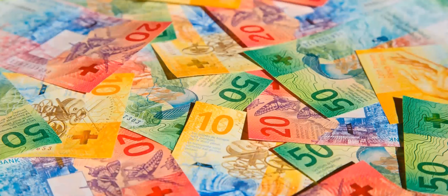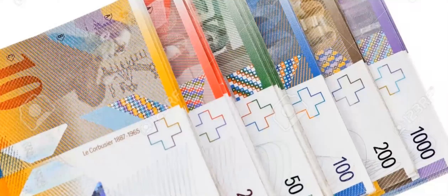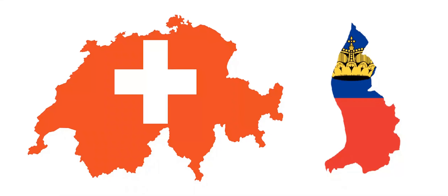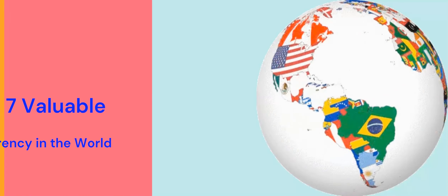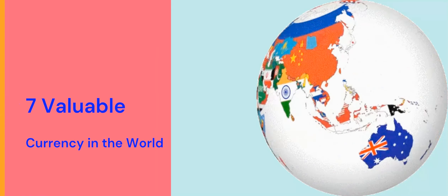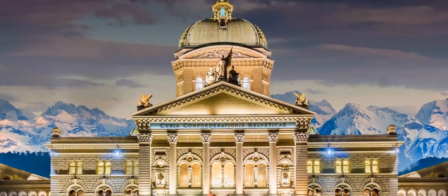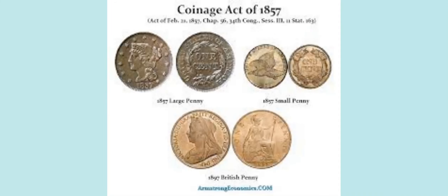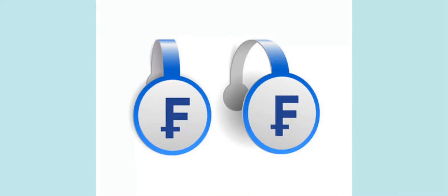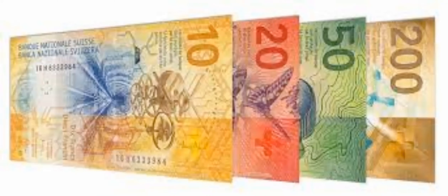The Swiss franc is the national currency of both Liechtenstein and Switzerland, and is the world's seventh most valuable currency. Switzerland declared in 1848 that the federal government would be the country's official money issuer. Under the Federal Coinage Act of 1850, the first Swiss franc was introduced as Switzerland's monetary unit, on par with the French franc.